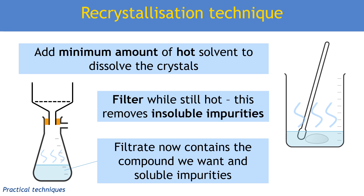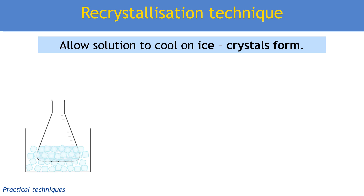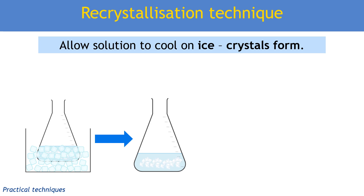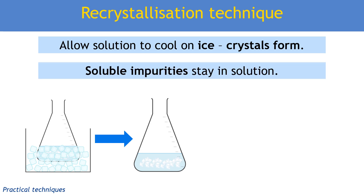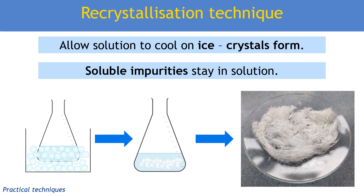What we're going to do now is put that filtrate on ice, or at least let it cool down — most of the time we cool it quite rapidly on ice. That will allow the crystals of the solid, for example aspirin, to form. They will be much, much purer than before, because those really soluble impurities will still be in solution and won't come out. The only thing that should come out of solution is those crystals of what I want — and that's how we get our nice, clean crystals.